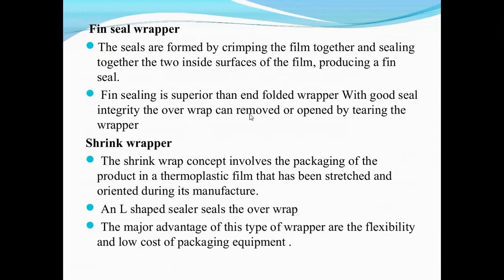Fin seal wrapper — the seals are formed by crimping the film together and sealing together on the two sides of the film, producing a fin seal. Fin sealing is superior to enfold wrapper with good sealing integrity over wrap, and can be removed or opened by tearing the wrapper.